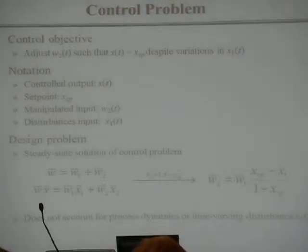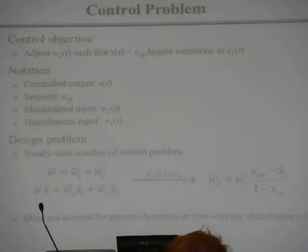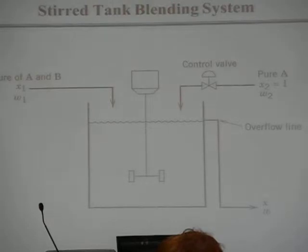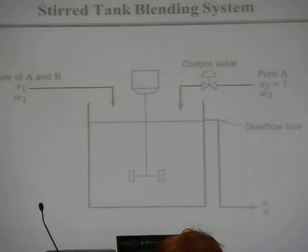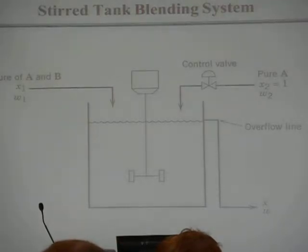The problem with that is: first, x1 typically won't be constant — it might vary, so I don't know what it is. Also, this doesn't account for the dynamics of the process. This is a steady-state approximation. The dynamics have to do with the residence time — the characteristic time of the system. If the residence time is large, the dynamics are really slow, which is typical of chemical processing.